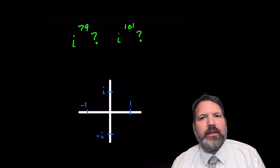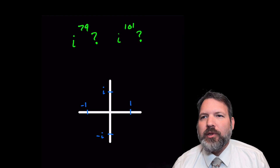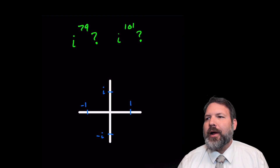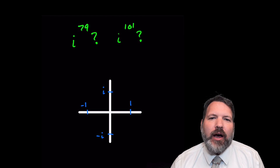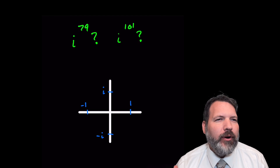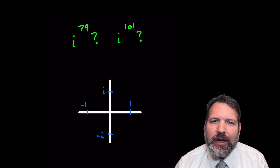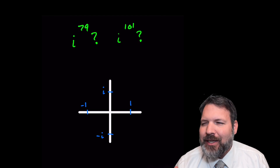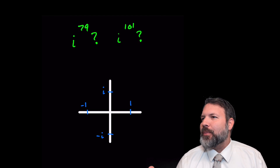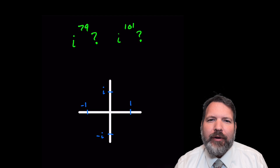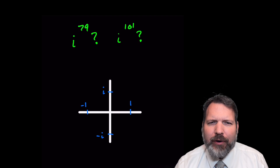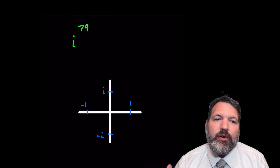Have you ever seen a problem like this where we have some large number i to the 79th, i to the 101st power, and we're supposed to find the value of that expression? And your teacher says something about yeah, it's related to dividing by 4 or mod 4, and you're like, what is this person talking about?